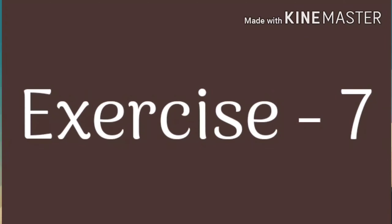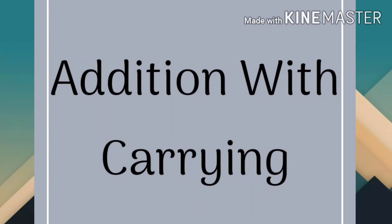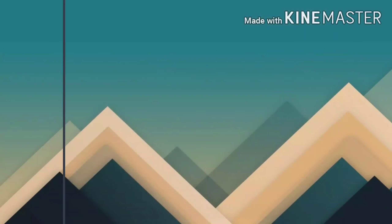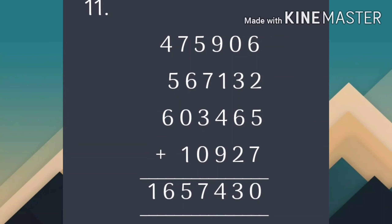Now the next type of exercise is exercise number 7, जो कि addition with carrying पर based है। अब हम carry के help से addition के questions को solve करेंगे। Carry को हम next column में add करते जाएंगे। Question number 11: 6 plus 2 = 8; 8 plus 5 = 13; 13 plus 7 = 20 - 0 carry 2. 0 plus 2 = 2.